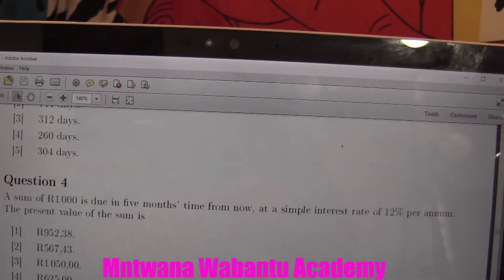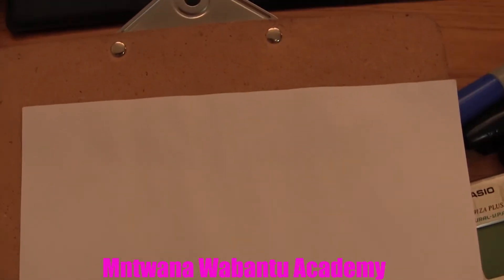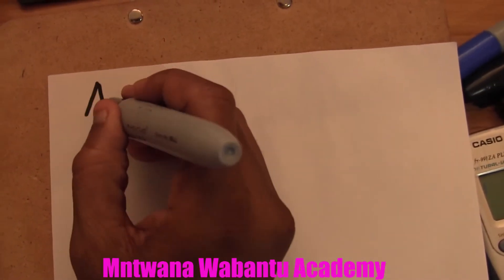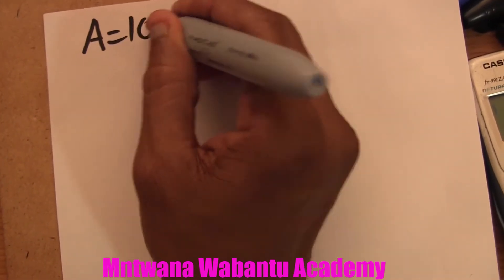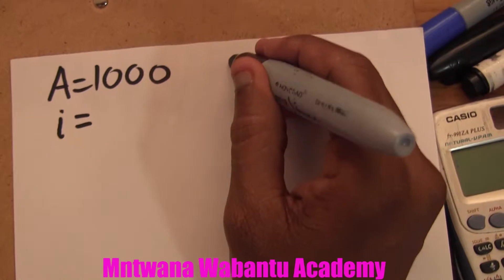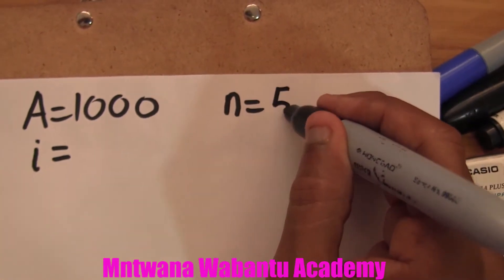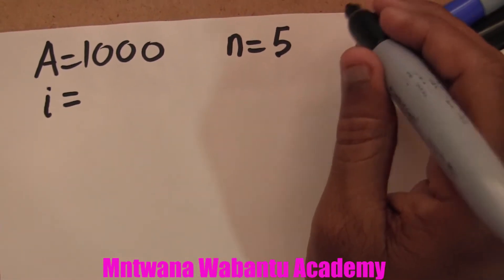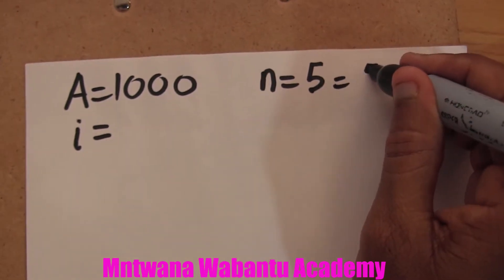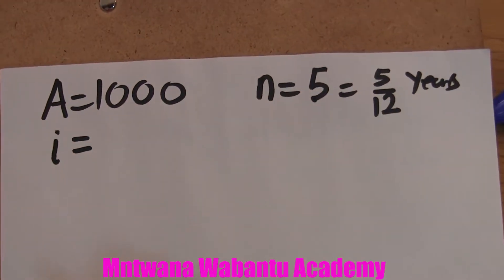Since it's simple interest, let's write our data down. My amount A equals 1000. The time n equals 5 months, but time has to be in years, so we change this: 5 over 12, which gives us time in years.